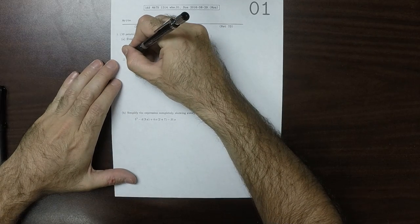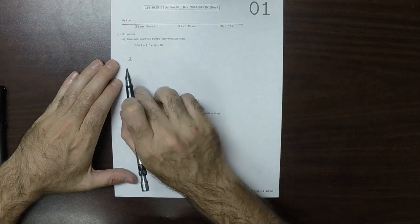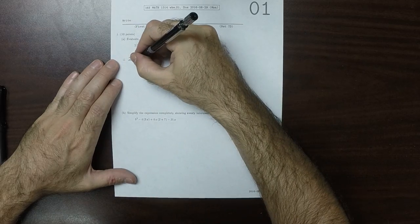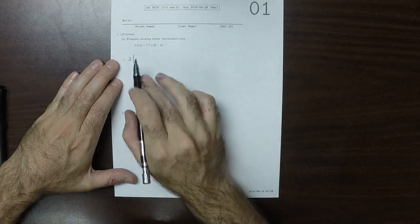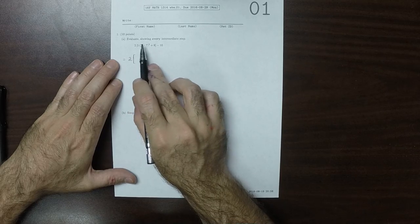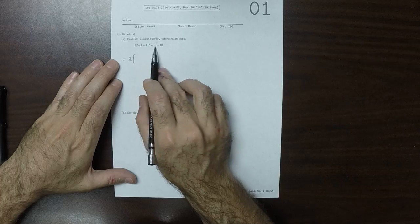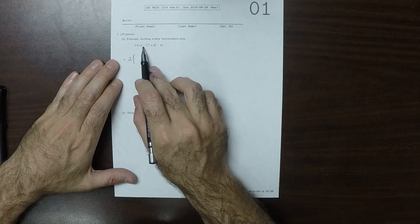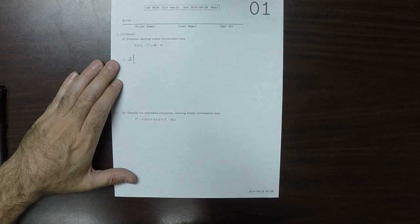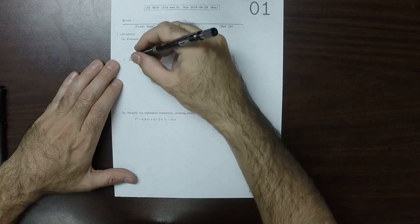Because of the order of operations, the first steps that must occur must be inside of these square parenthesis, which are called brackets, and then inside of these square parenthesis there's these round parenthesis, just called parenthesis. So what's inside of there must be evaluated first.